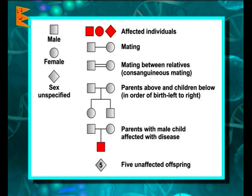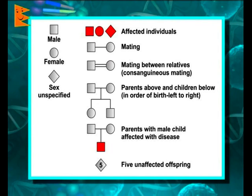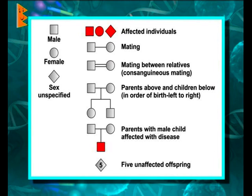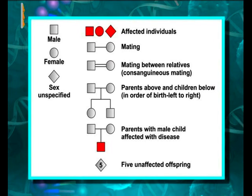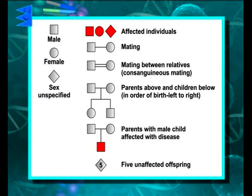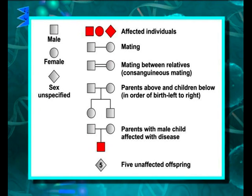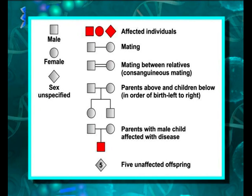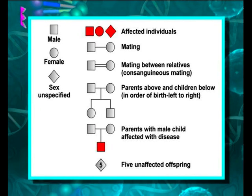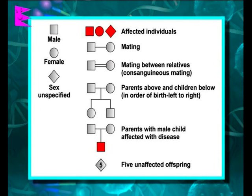We can do controlled breeding as Mendel did in peas — and in cows, buffalos, and many other organisms. But it is very difficult to do controlled breeding in human beings. That's why pedigree analysis is done instead.